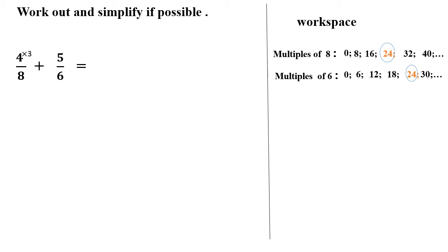To transform 8 into 24, we multiply it by 3. Therefore we multiply the numerator and denominator of the first fraction by 3. To transform 6 into 24, we multiply it by 4. Therefore we multiply the numerator and denominator of the second fraction by 4. The result is 12 over 24 plus 20 over 24. Now we have the same denominator, so we can start the operation by adding the two numerators.